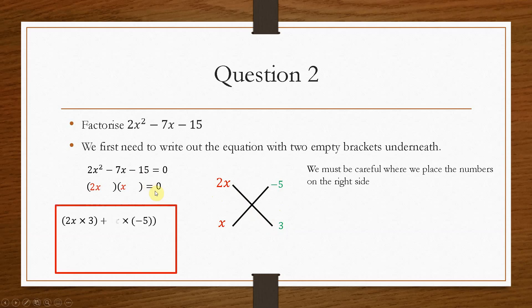So we'll do our check, and we'll do 2x times 3, plus, it's always a plus, x times minus 5. So that will be 6x, take away 5x, which gives us x. This is not what we need. What we are looking for is minus 7x. So we need to try again.